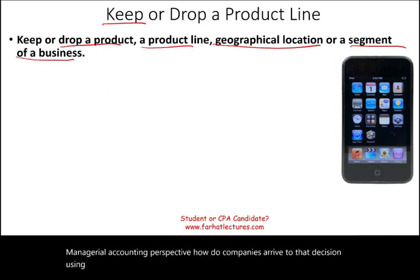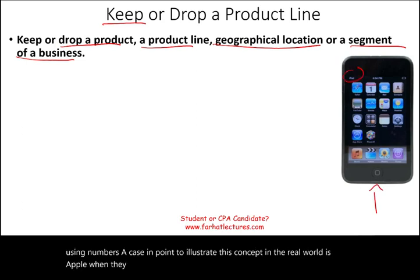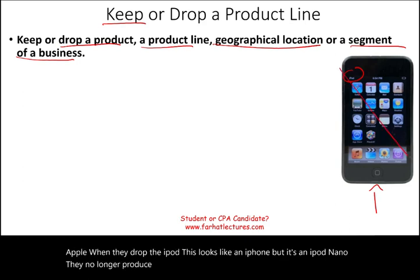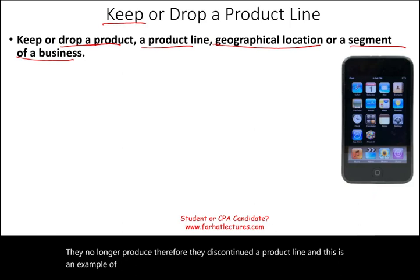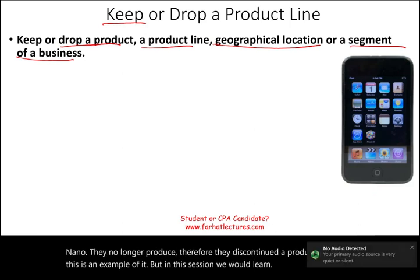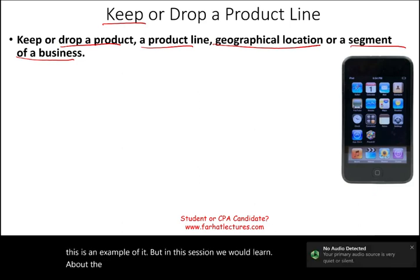A case in point to illustrate this concept in the real world is Apple when they dropped the iPod. This looks like an iPhone but it's an iPod — they no longer produce it. They discontinued that product line, and in this session we'll learn about what numbers they take into account when making these decisions.